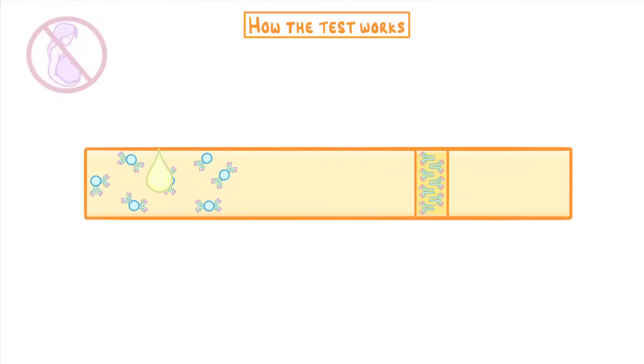If you wee on the stick when you're not pregnant, the urine will wash the unfixed beads along the test strip. So they'll flow right over the fixed antibodies on the other part, and nothing will happen. So the test strip doesn't go blue.